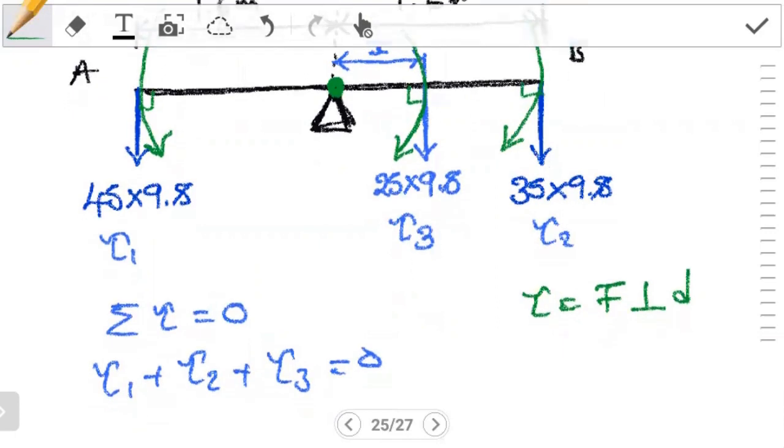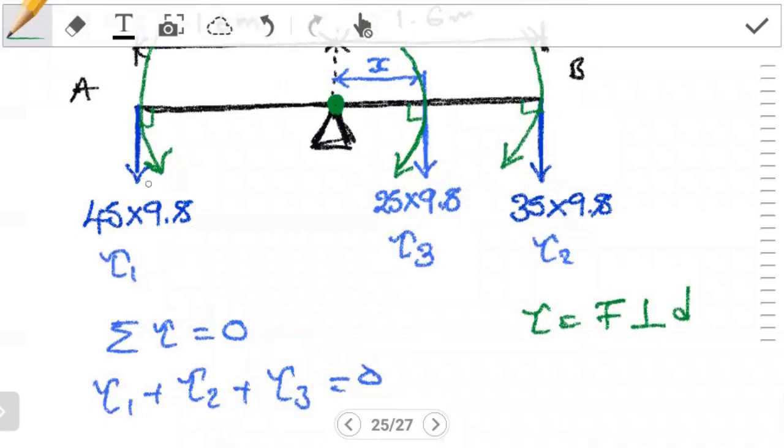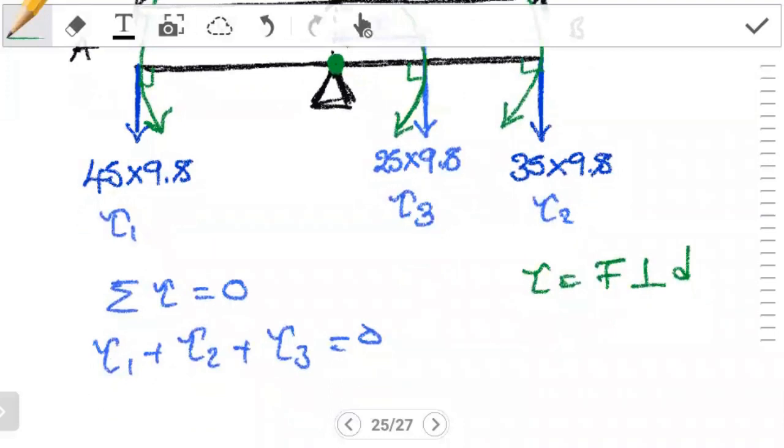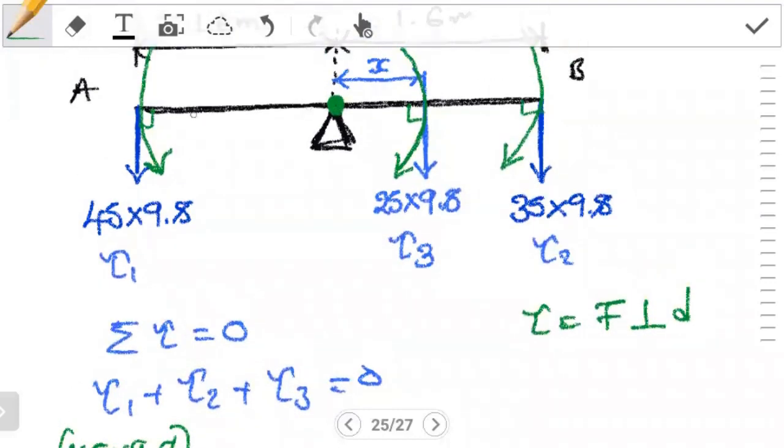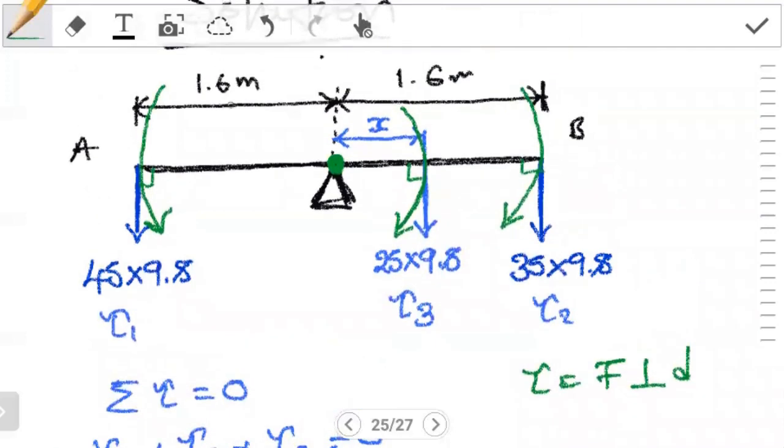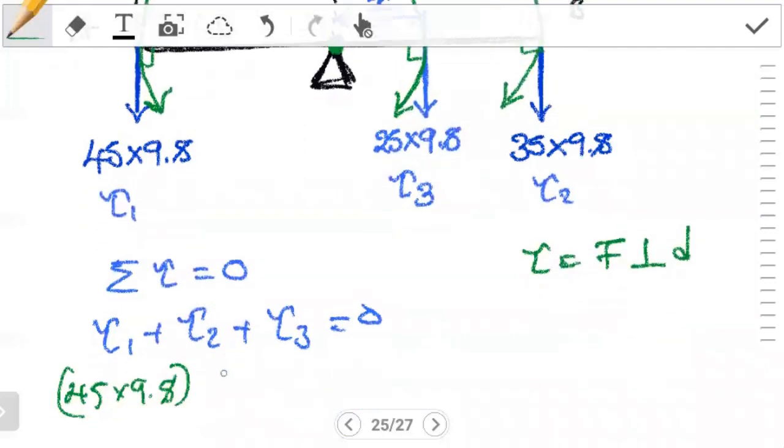So for A, the weight is 45 times 9.8. So that is 45 times 9.8. Now this gives us the weight. How about the distance? The distance is from the pivot. And we see that from the pivot, it's 1.6 meters. So this is by 1.6 meters. So this is anti-clockwise. It is positive. Torque two is clockwise. It's negative. That is going to be 35 by 9.8, the weight, multiplying the distance. Again, this is 1.6. Minus.